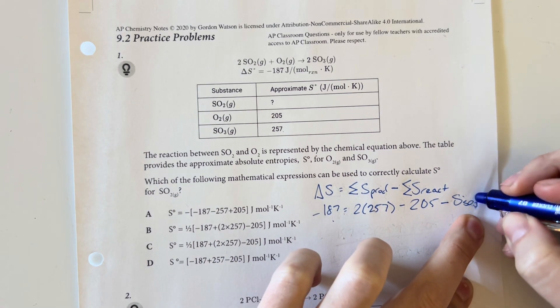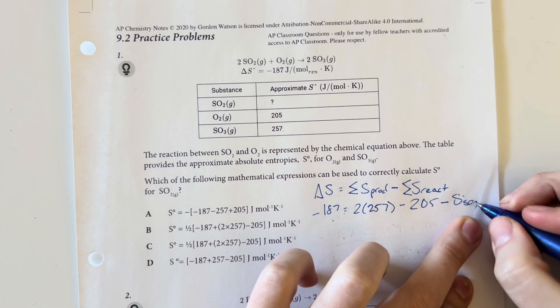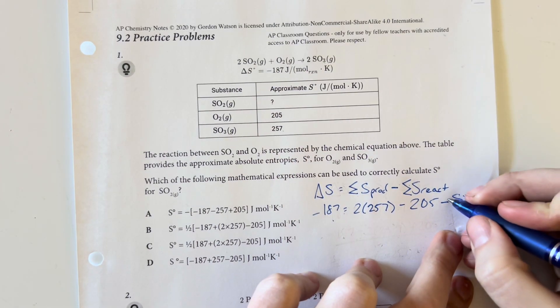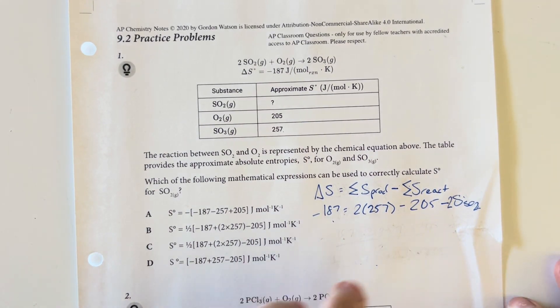And then also minus our S value for the sulfur dioxide. Since we do have the coefficient of 2 here, it's going to be 2S for the sulfur dioxide.